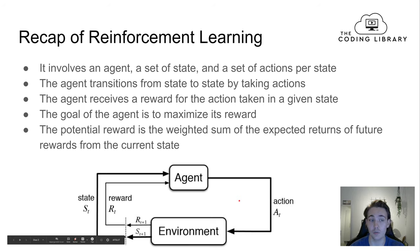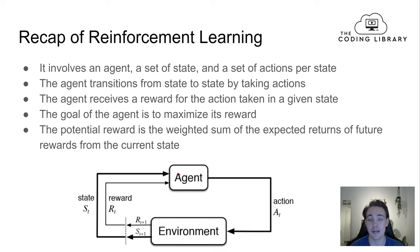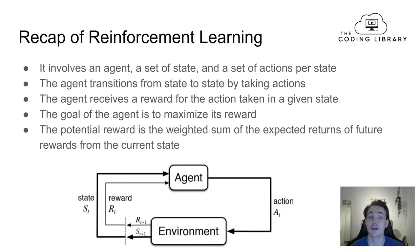Here we have an example of how reinforcement learning works. The agent takes some action in the environment at time step T, in a given state, and gets a reward for that action. Then we move to the next time step, transitioning to a new state S(T+1). The next state is fed back to the agent, which takes a new action based on potential future rewards, and this continues until the agent learns to maximize reward and reach the goal optimally.